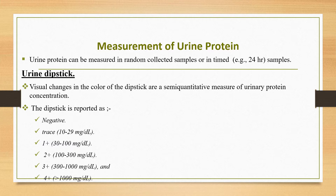Visual changes in the color of the dipstick are semi-quantitative measures of urine protein excretion. The dipstick is reported as negative, trace, +1, +2, +3, or +4. Trace is when proteinuria is from 10 to 29 mg/dL. Plus 1 is 30 to 100, plus 2 is 100 to 300, plus 3 is 300 to 1000, and plus 4 is greater than 1000 mg/dL.